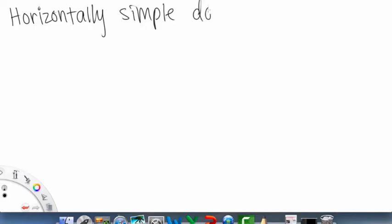Okay, so the other one was vertically simple. Now we'll explore horizontally simple. Horizontally simple, and we're talking about the domain. Okay, so this one, on the other hand, looks something like this. So we have our X and our Y, X and Y.